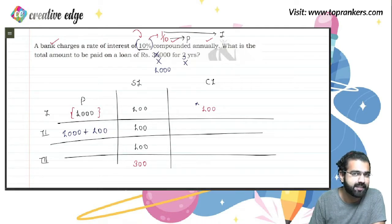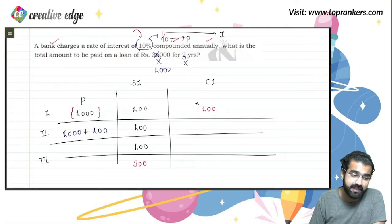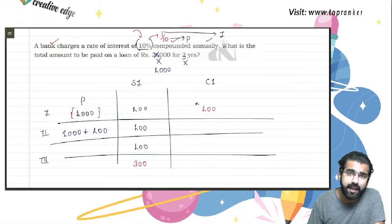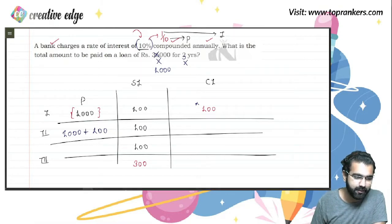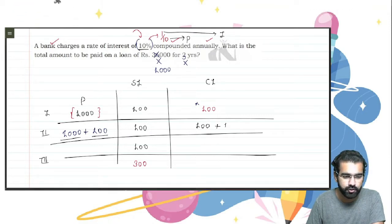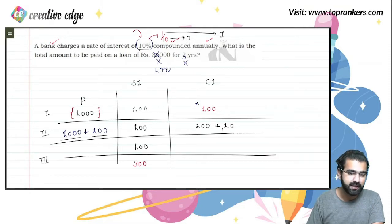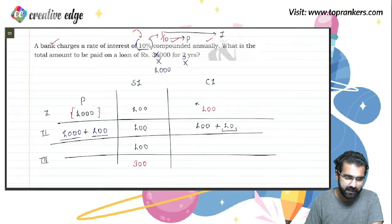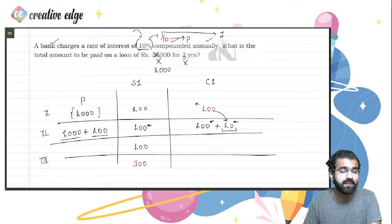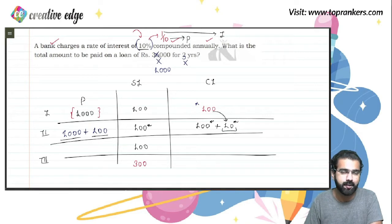So compound interest is nothing but interest on interest. In the first year the principal was 1,000, generating 100 interest. In the second year the updated principal becomes 1,000 plus 100 = 1,100. And 10% of 1,100 is 110. You can think of it as: 10% of 1,000 is 100, plus 10% of this 100 is 10 — giving 110. That extra 10 is the 10% applied on the previous year's accumulated interest.